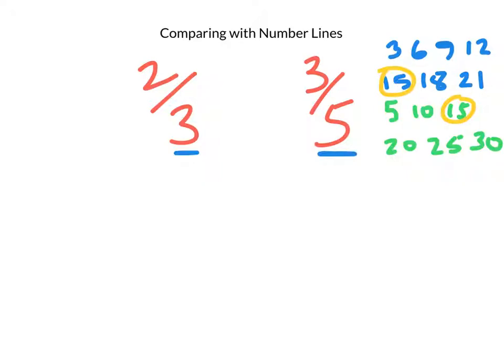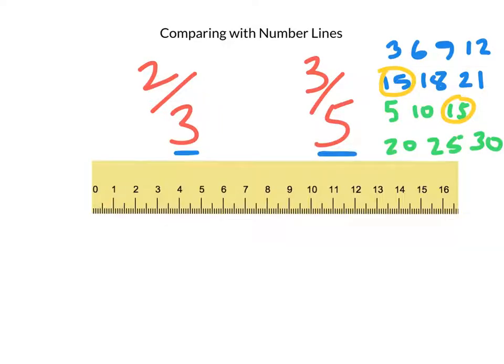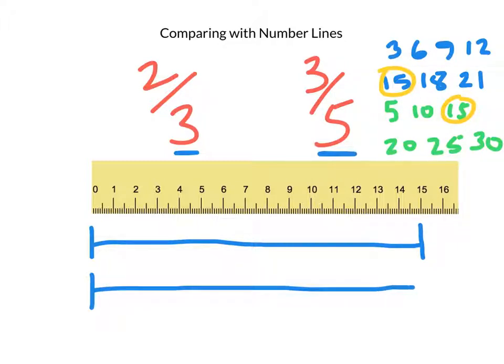In order to do this, I need a trusty tool called a ruler. Okay, so I'm going to draw my number lines 15 centimeters long. And as I draw them, I'm going to make sure that they are congruent. That means they have the same starting point and the same end point. They're the same size and shape. That's really important, boys and girls.